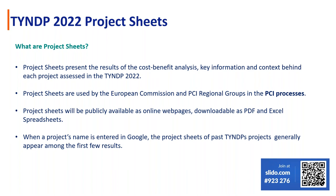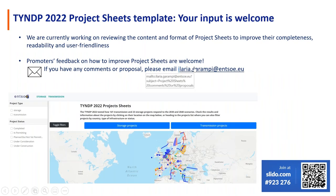Project sheets are available in three formats: an online platform, a downloadable PDF version, and Excel spreadsheets. The TYNDP 2022 project sheets platform is still in progress — we are currently reviewing the content and format to improve completeness, readability, and user-friendliness compared to the previous edition. These improvements are mainly based on stakeholder comments and ACER's opinion on project sheets from TYNDP 2020. For instance, we will improve the scenarios comparison in the project assessment part by adding bar charts to make it more intuitive.